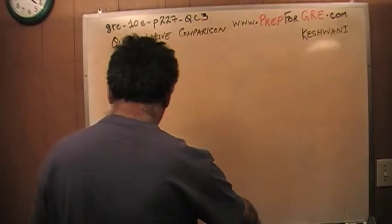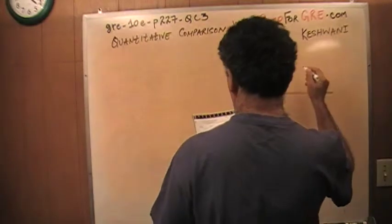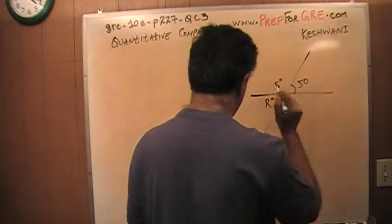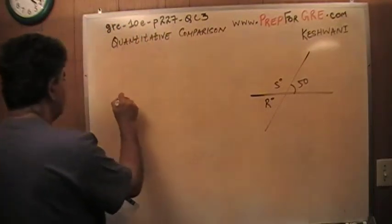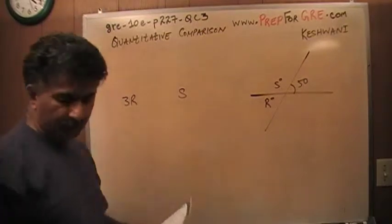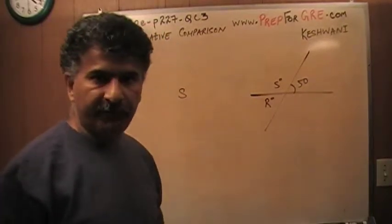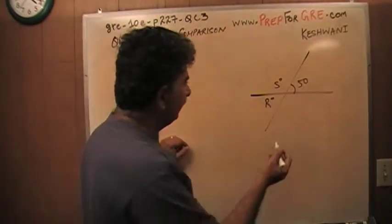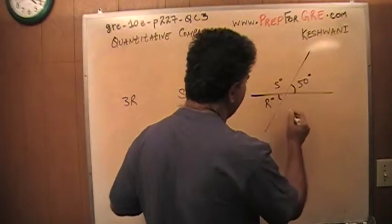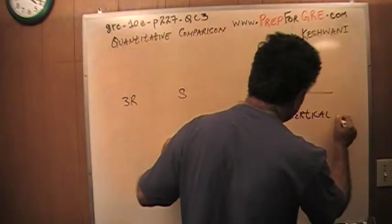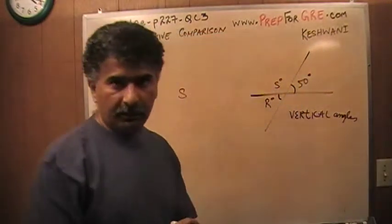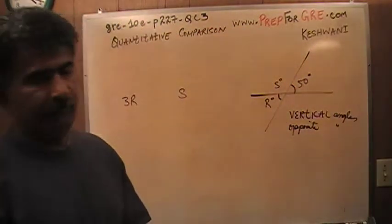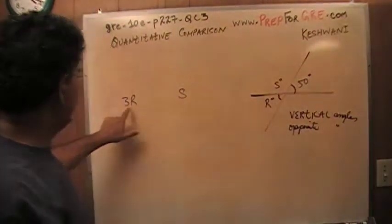They give you a geometry picture. This angle we are told is 50. This angle we are told is R. This angle is S. We are asked to compare three times R versus S. This is 50 degrees. This angle and this angle are known as vertical angles — also sometimes referred to as opposite angles — and they are equal. Hence, if this is 50 then R is 50, and therefore 3 times R would be 150.